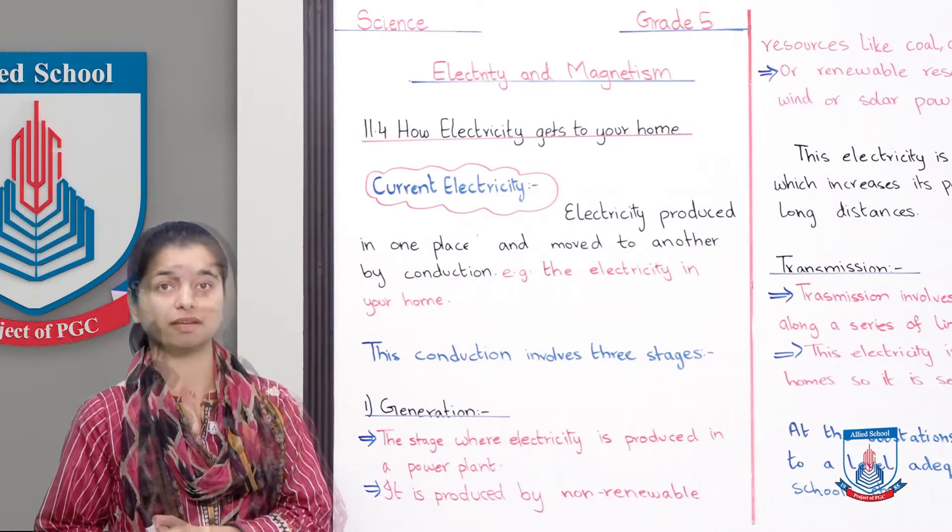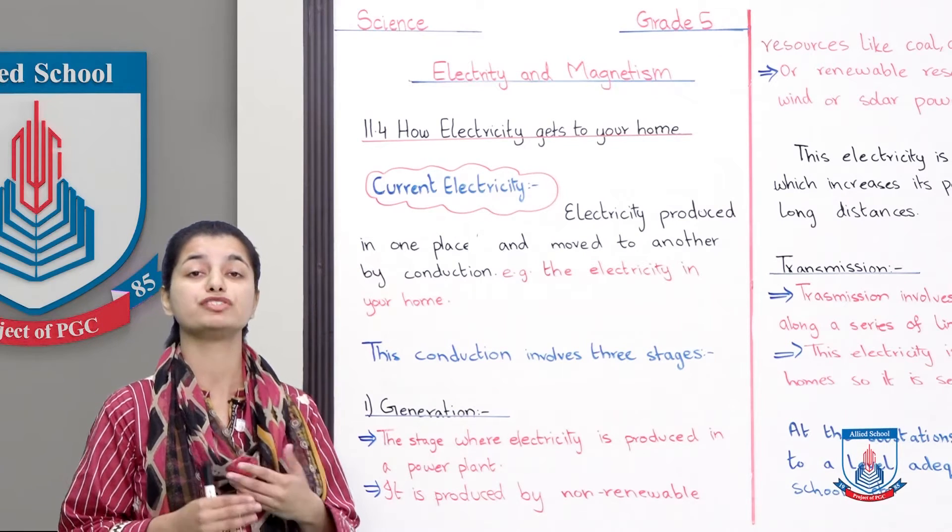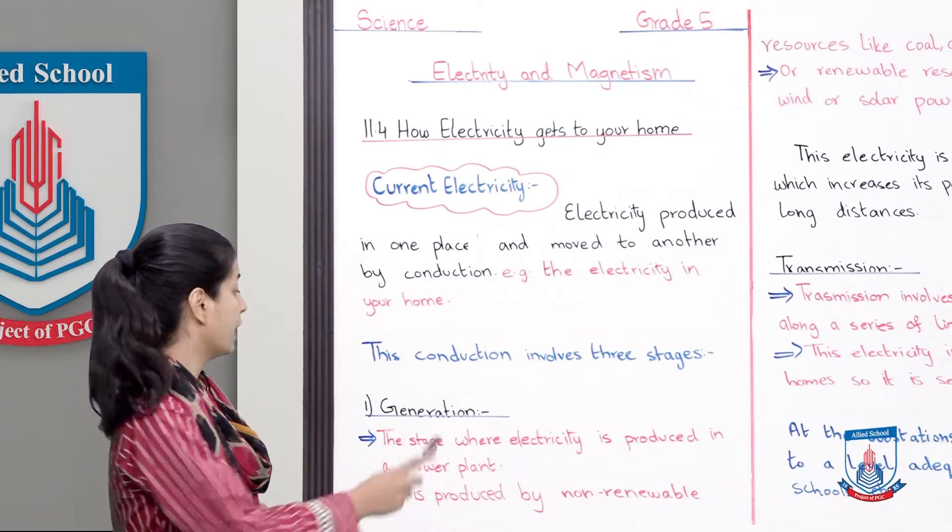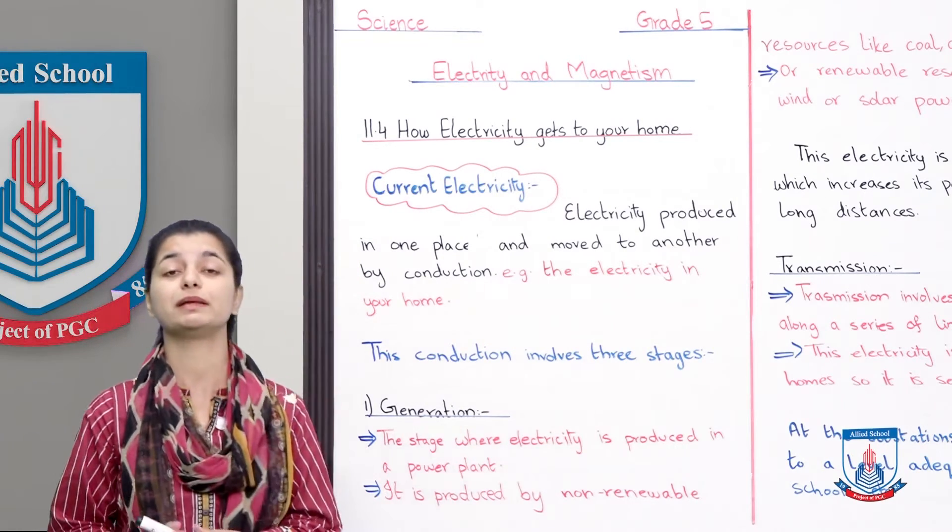The first stage is generation. Generation means to generate something, to make something, to start something. What is generation? The stage where electricity is produced in a power plant.